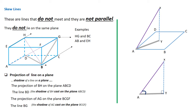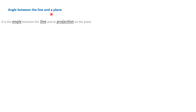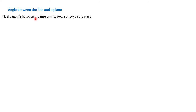We proceed to another concept — the angle between a line and a plane. The angle between a line and a plane is normally the angle between the line and its projection on the plane. There is a projection of the line on the plane, and the angle between the line and that projection actually defines the angle between the line and the plane.